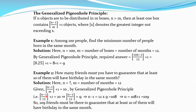To find n-1, we shift 12 to the right side. So n-1 equals 12 times 9, which is 108. Therefore n equals 108 plus 1, that is 109. So 109 friends must be there to guarantee that at least 10 of them will have a birthday in the same month.